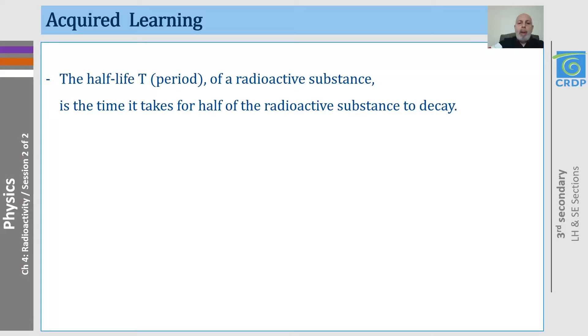In this session, we learned that the half-life T of a radioactive substance is the time it takes for half of the radioactive substance to decay and that the activity of a sample is the number of disintegrations per unit time. Thank you for watching. See you next time and keep up the good work.